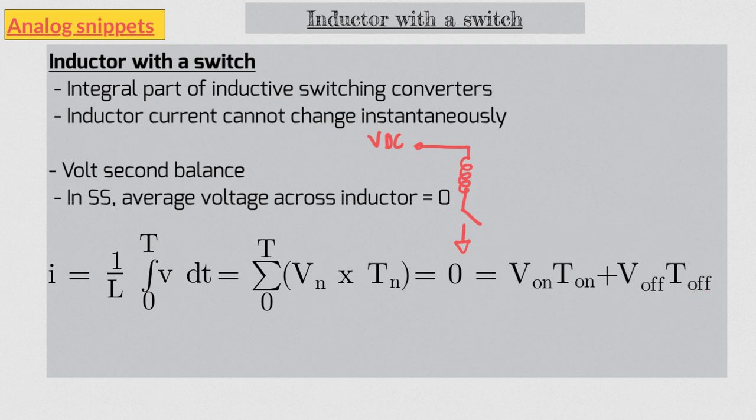In this equation both t on and t off are obviously positive because they are the time. As a result in order to make the whole sum equal to zero one of the voltage is positive and other must be negative. And that is the trick.